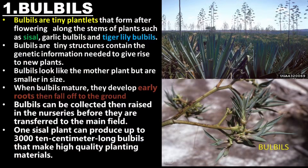When bulbals mature, they develop early-stage roots then fall off to the ground. Bulbals can be collected then raised in nurseries before they are transferred to the main field. One sisal plant can produce up to 300 bulbals, 10 cm long, that make high-quality planting materials.